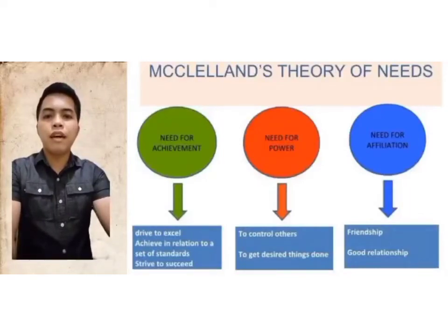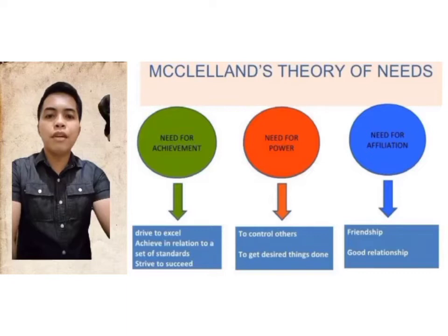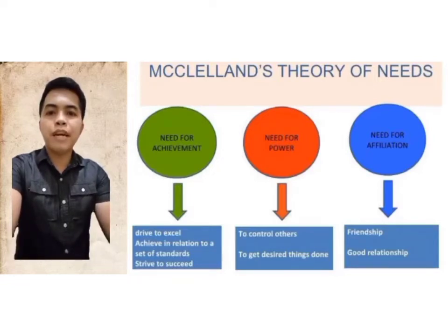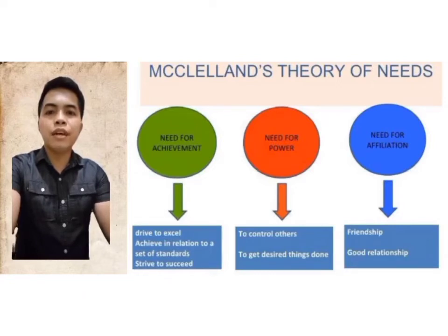In 1961, an American psychologist named David McClelland identified three motivators that he believed we all have: a need for achievement, a need for affiliation, and a need for power. He says that these motivators are learned, which is why this theory is sometimes called the learned needs theory. Proper guidance and assistance from parents, caregivers, and teachers plays a big role in activating those motivators that are necessary to meet the child's needs.